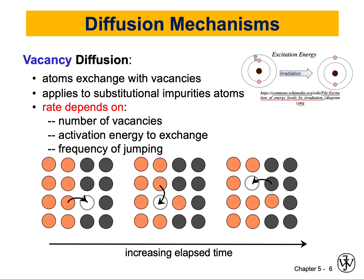The rate of vacancy diffusion depends on three parameters. The first is the number of vacancies. If our process results in a large number of vacancies, we're going to have a lot of vacancy diffusion. The more vacancies present in the material, the higher the rate of diffusion.